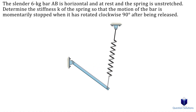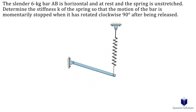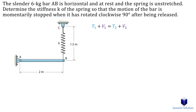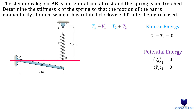Let's look at the next question: we have a bar resting horizontally, then we rotate it 90 degrees and want to find the spring stiffness that would hold it at that angle for a moment. Writing our conservation of energy equation, we note that the bar starts from rest and also stops at the end, so both kinetic energies are zero. Drawing a datum at the initial position and marking the center of mass, the initial gravitational potential energy is zero, and the spring is not compressed or extended, so initial elastic potential energy is also zero.